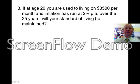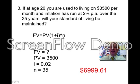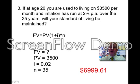Now, is that going to be enough money? If at age 20 you're used to living on $3,500 per month and inflation runs at 2% over the 35 years, will your standard of living be maintained? In other words, will $3,500 per month be enough in 35 years' time? So this is a compound interest question — FV, PV, I, and N. Future value is what you're wanting to have each month. Present value is what you've got at the moment. I is the interest rate — or the inflation rate in this case — and N is the number of years. So PV is what your standard of living now is, or how much money you live on per month. I is 0.02 because that's 2%. N is 35. Put that into the calculator and you'll end up with $6,999.61 — so approximately $7,000. If you're living on $3,500 a month at the moment, you're going to need $7,000 a month when you retire.